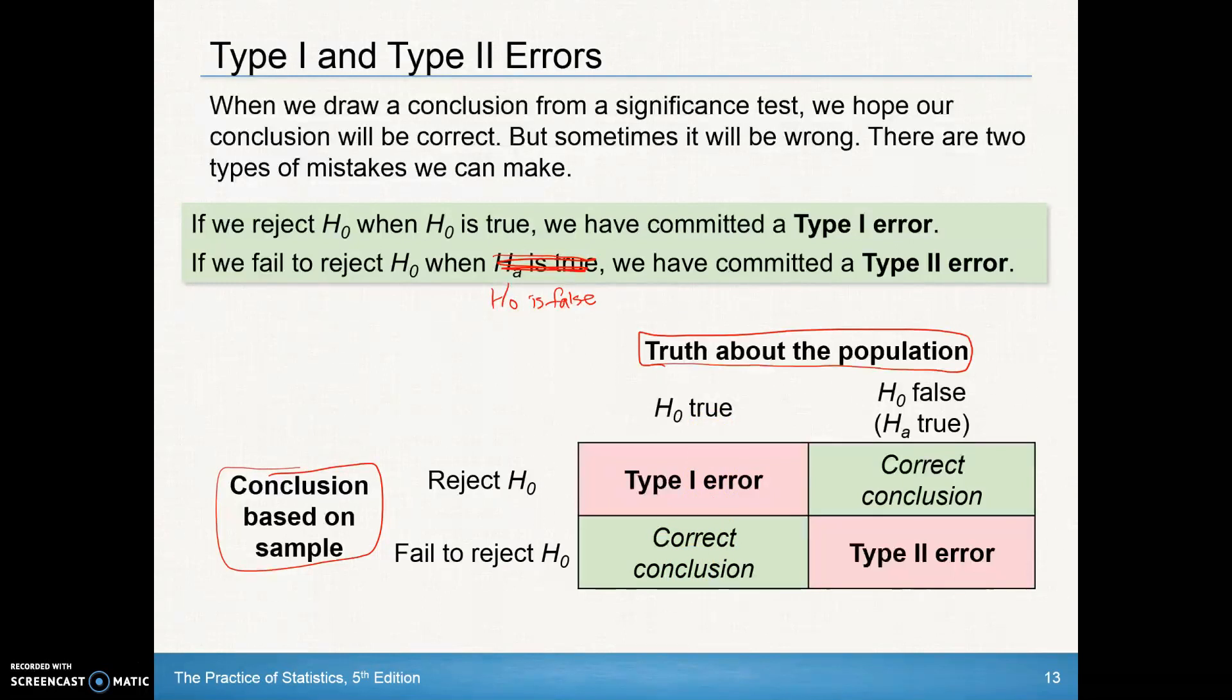So this is a really good table to help you remember these things. But again, just remember type 1: reject the null when the null is true. Type 2: fail to reject the null when the null is false.